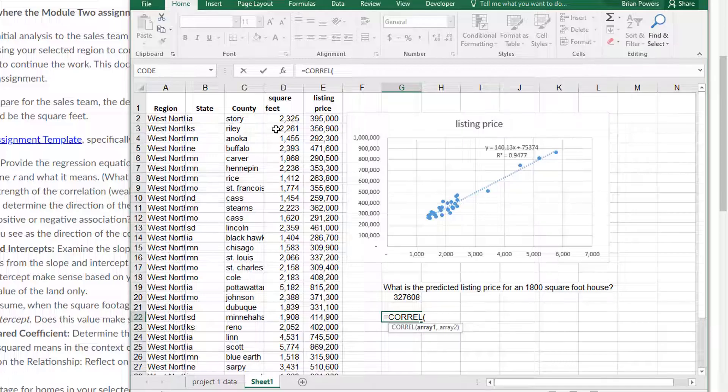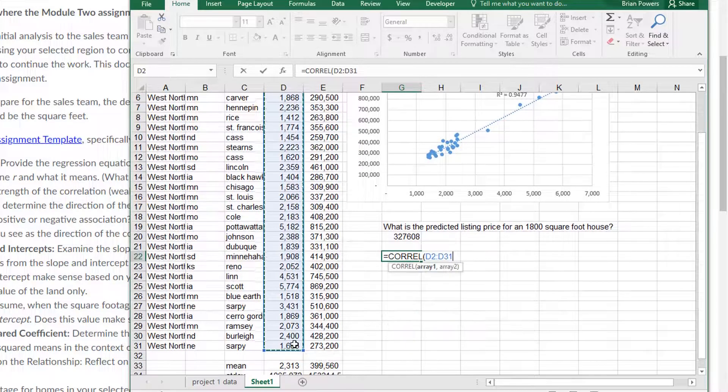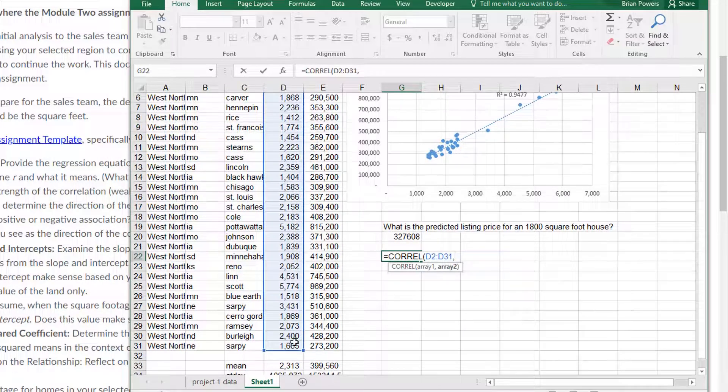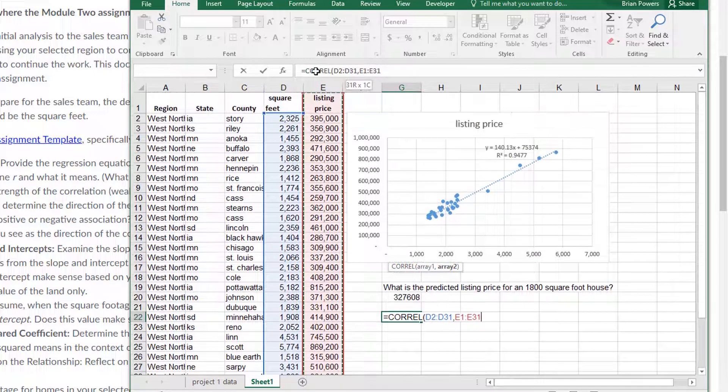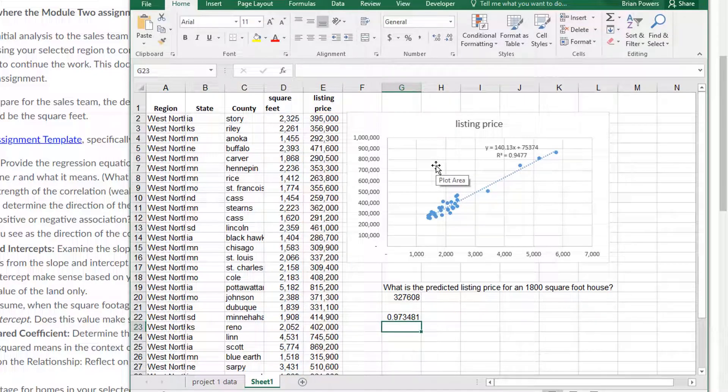We're going to select the first list of numbers, the square feet, from the top of the list and scroll down to the bottom. Okay. And then put in a comma and then we're going to select our second list of listing prices. And I'm going to close the parenthesis and hit enter. That's my correlation.